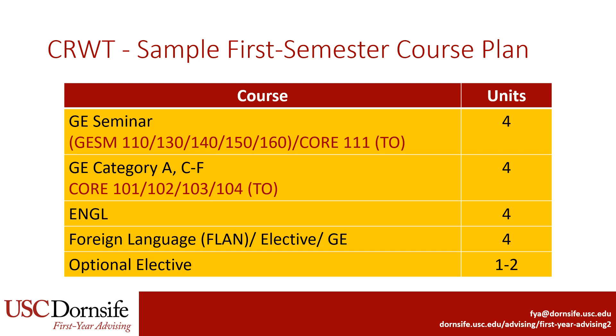Please note that full-time tuition at USC covers 12 to 18 units, so students have the option to enroll in additional 1 to 2 units of electives if they wish.